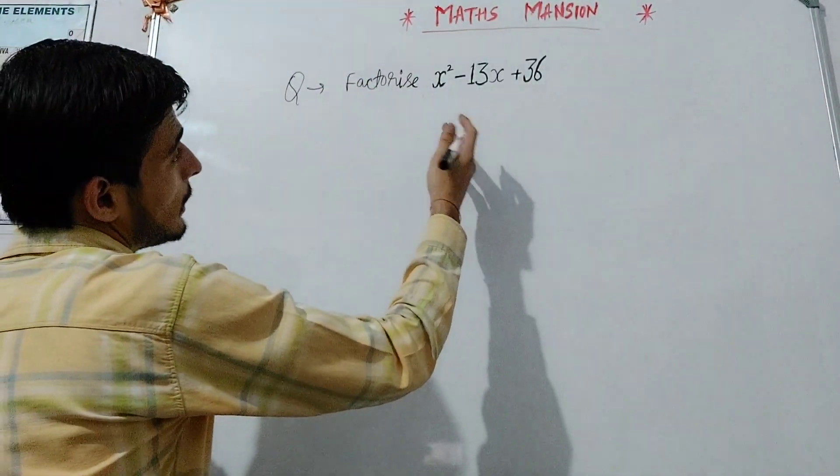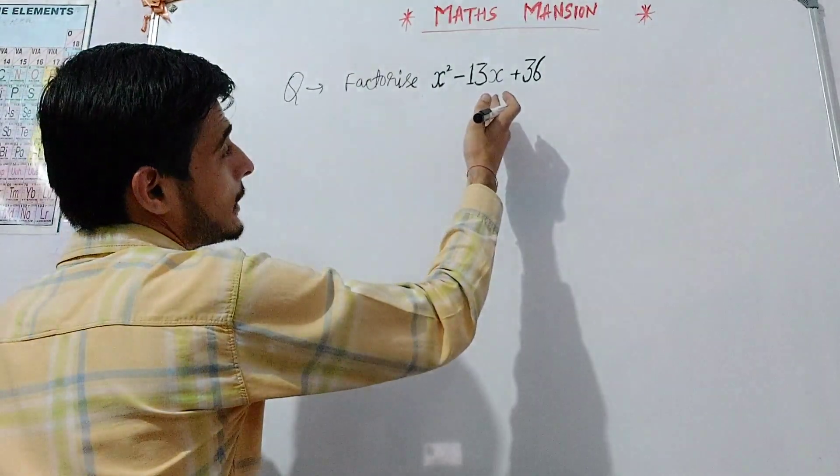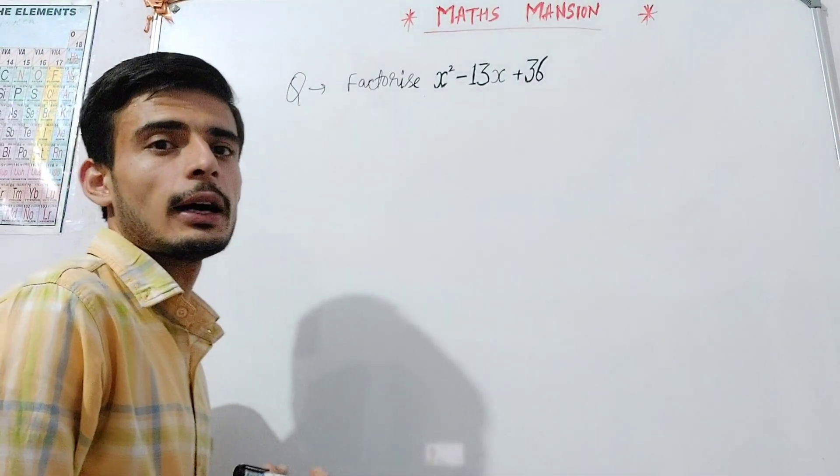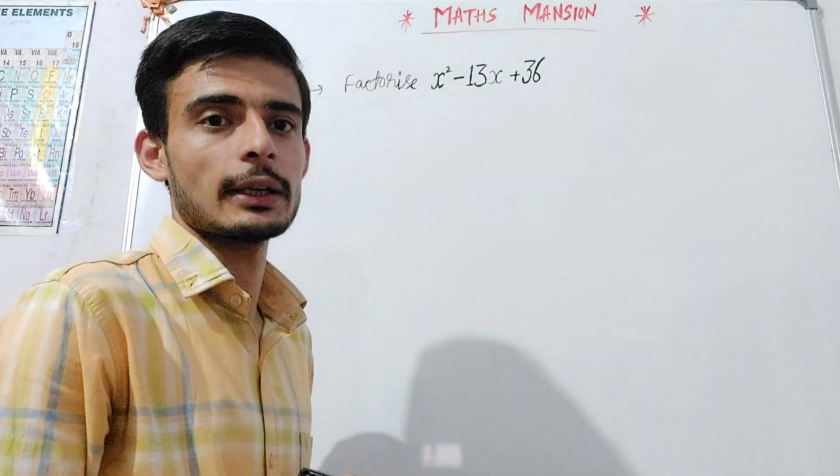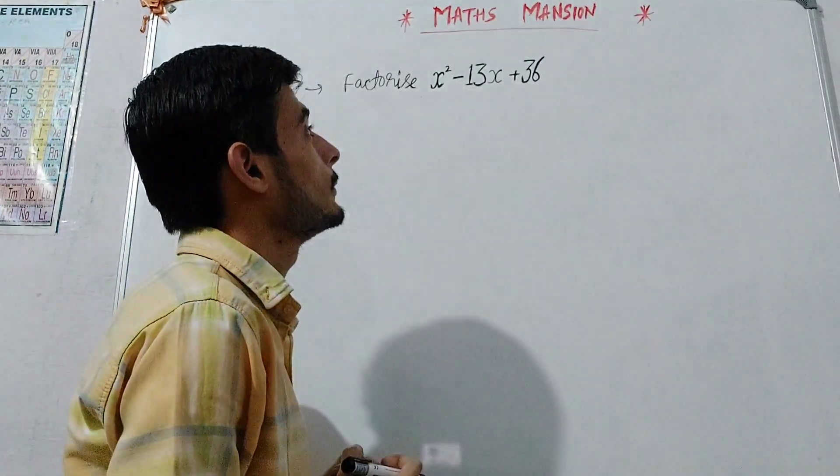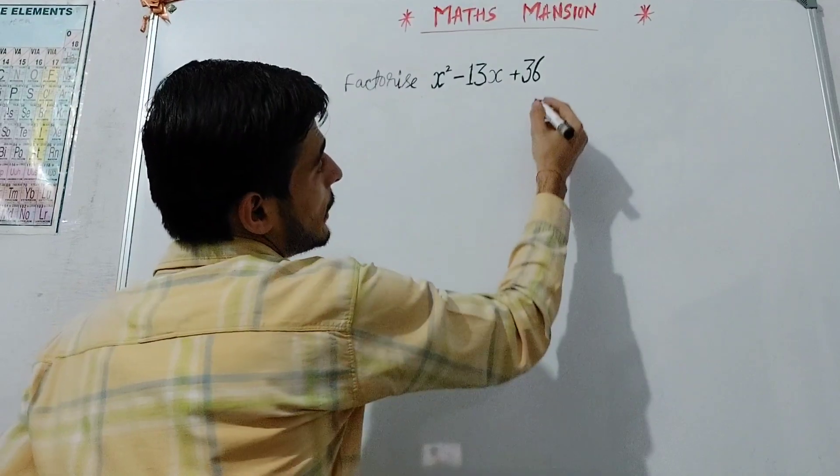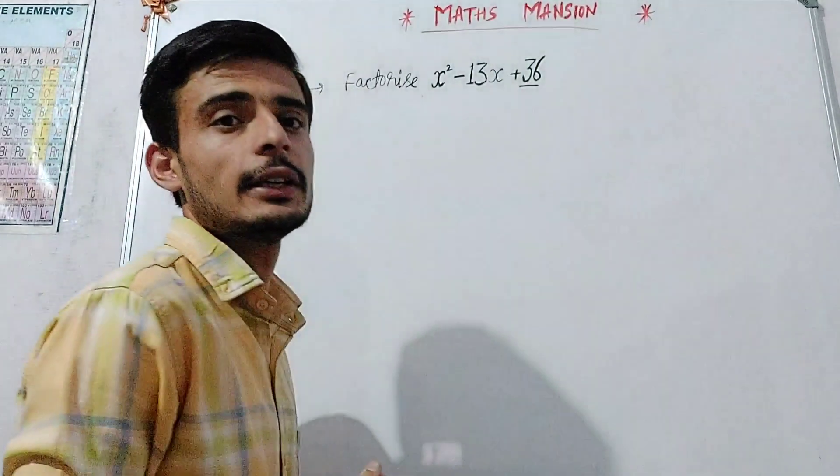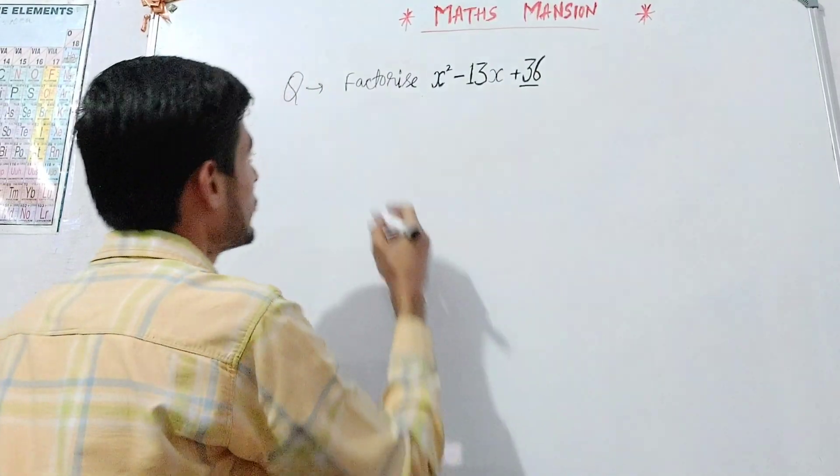We are given a polynomial x² - 13x + 36. Now first of all, you choose the constant term. Here the constant term is 36, so 36 to 1.